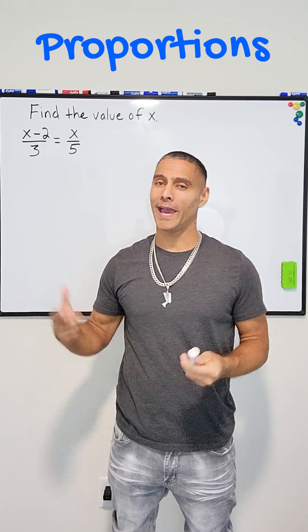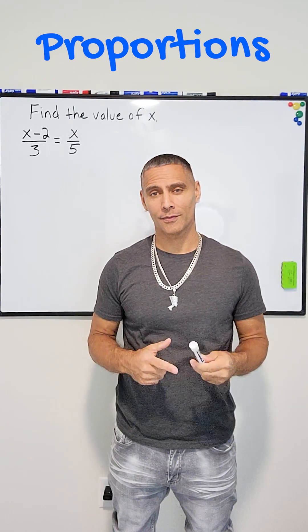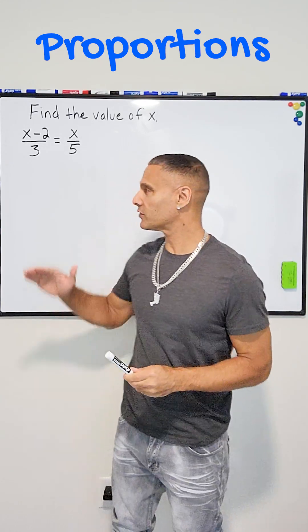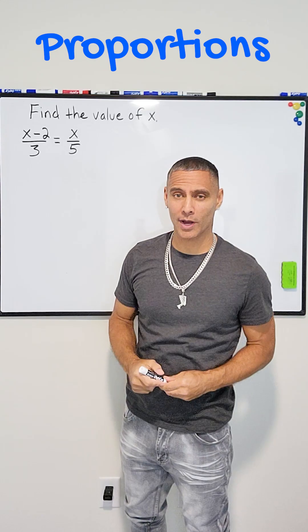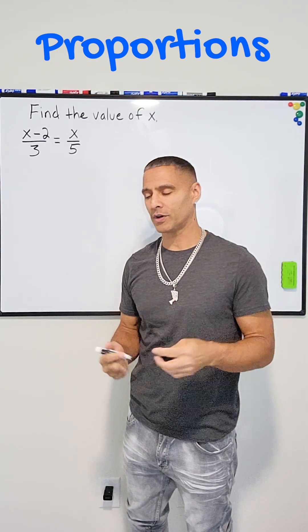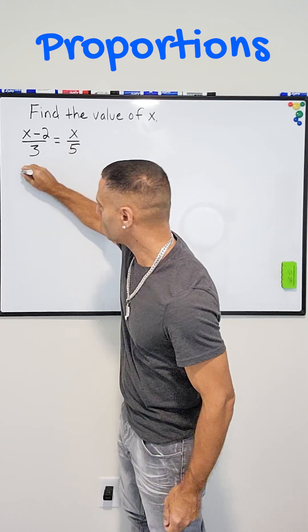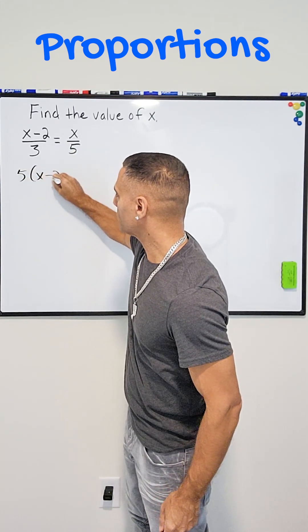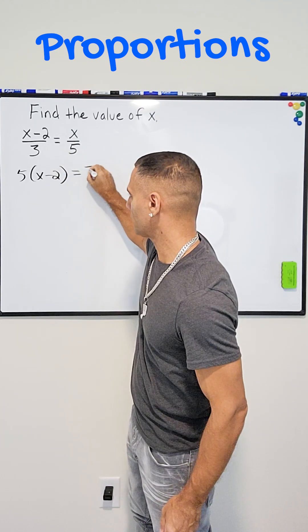Hey, this is Mr. Masonette, and what we have here is a proportion where we have to solve for x. Now remember, with any proportion, when you cross multiply in either direction, you're going to come up with the same cross product. So what we're going to do is write an equation that expresses that reality. So we're going to say that 5 multiplied by x minus 2 is equal to the product of 3 and x.